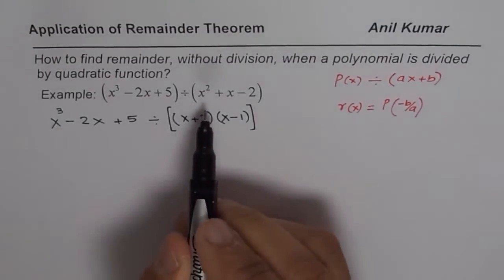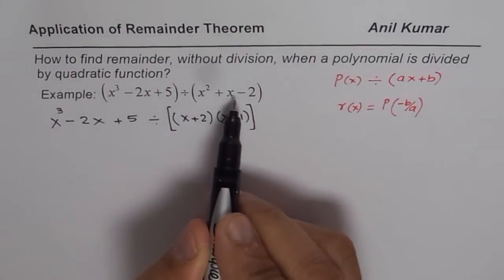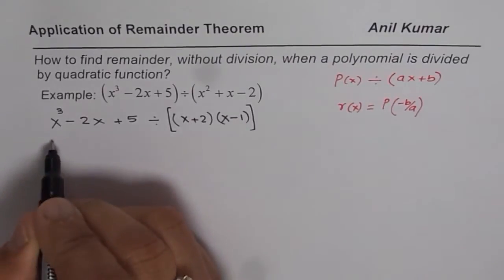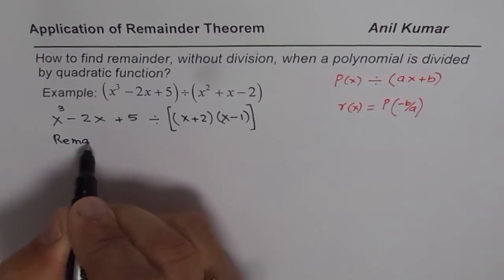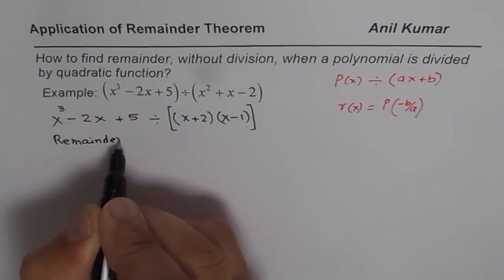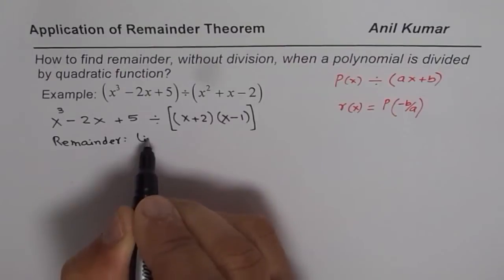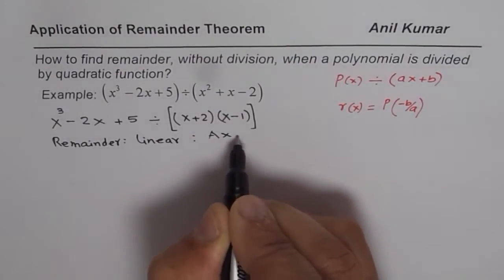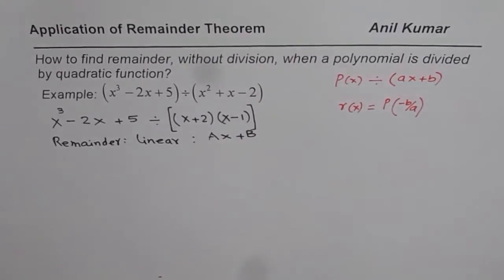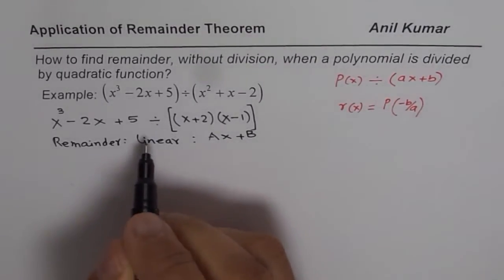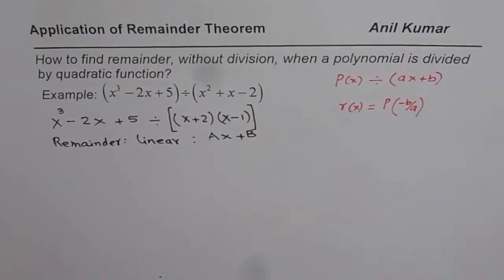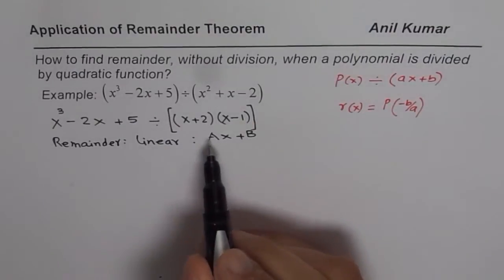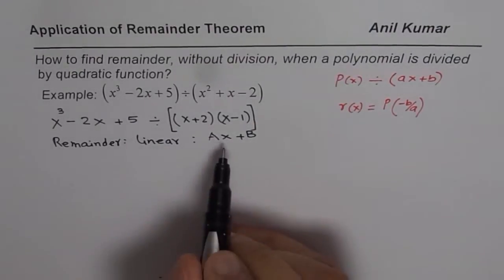Now as you can see, if you divide by a quadratic function, what kind of remainder do you expect? The remainder should be linear. One degree lower, which in this case is linear, which I could write as AX plus B in general form. So let the remainder be AX plus B. Now we need to find the value of A and B.